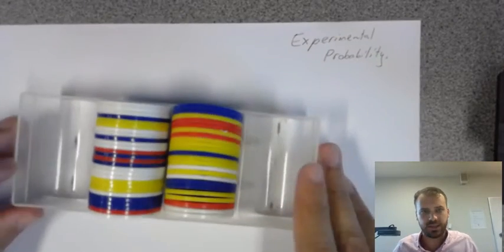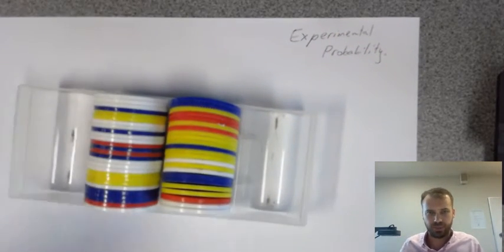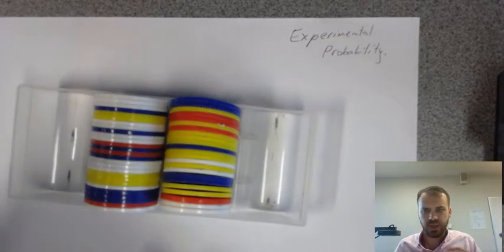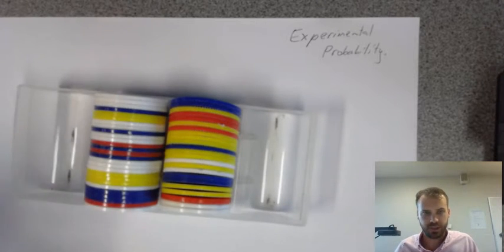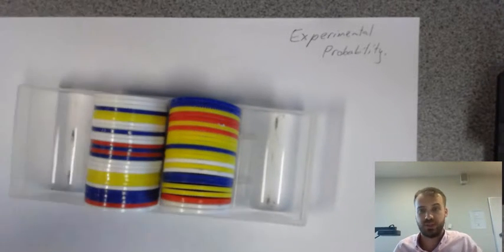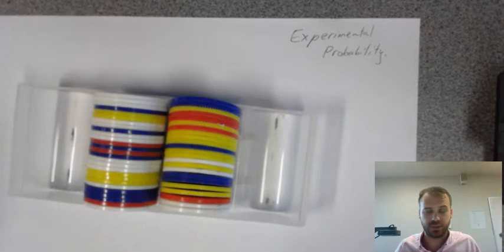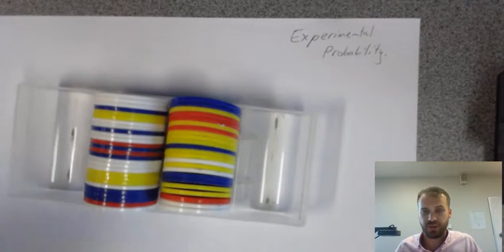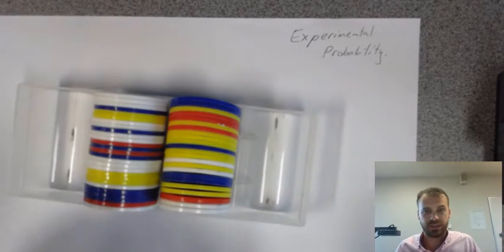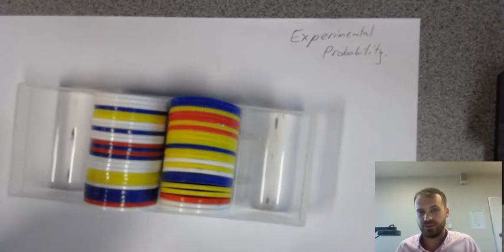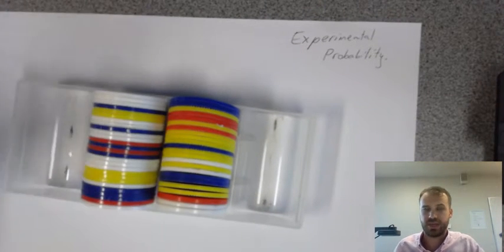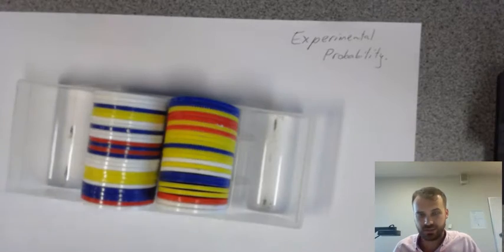Now, you've already seen this experiment before. Here's my experiment. It's a number of disks, yellow, white, blue, and red. And I want to know what the probability is of pulling out a blue disk, or pulling out a yellow disk, or pulling out a white disk, or pulling out a red disk. Because the probabilities, I think, aren't even. I don't think there's the same number of blue disks as white disks, as yellow disks, as red disks.